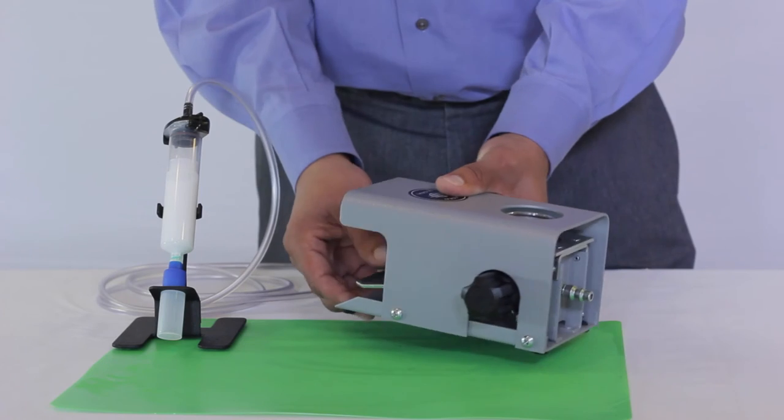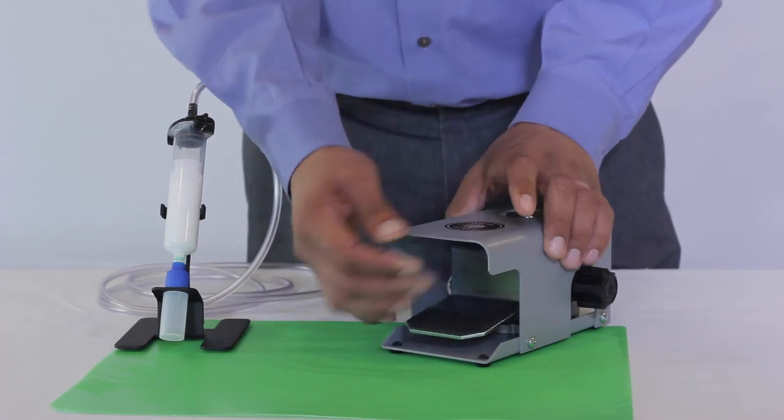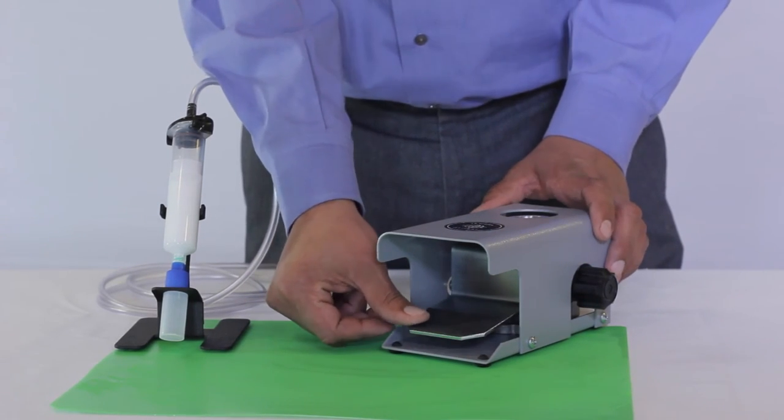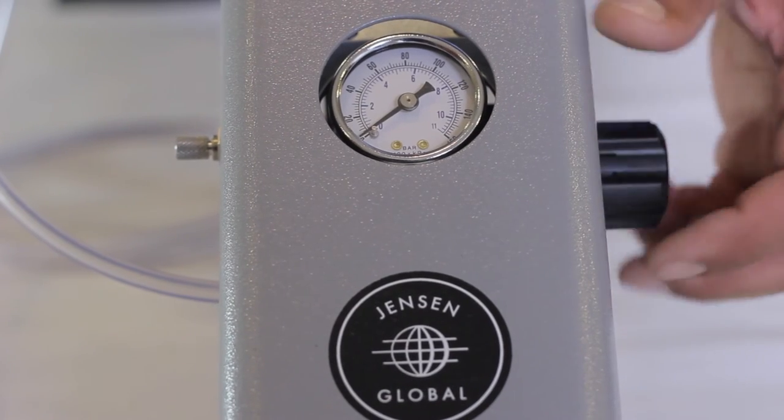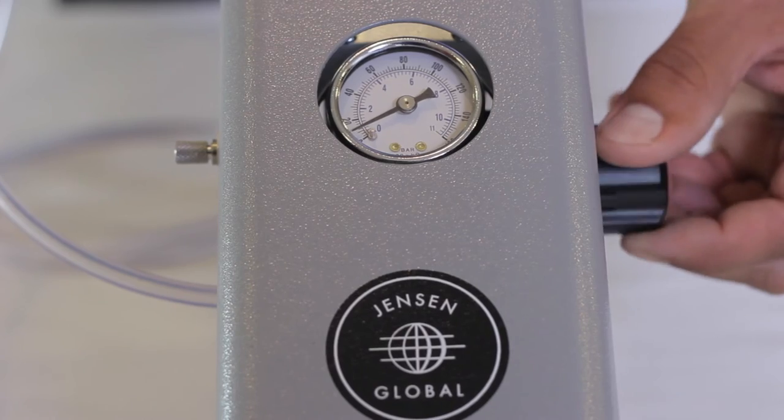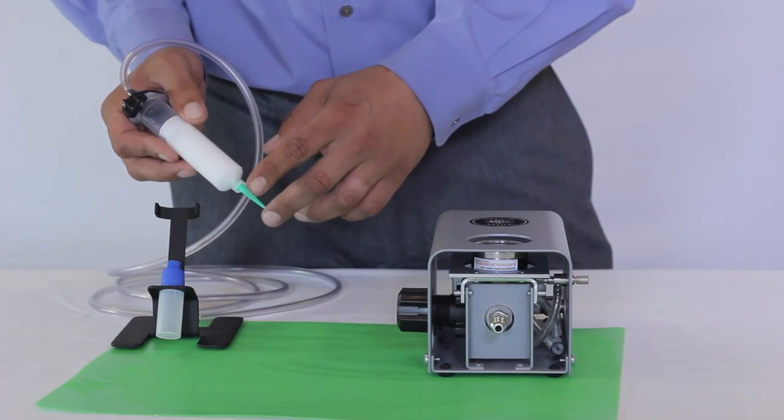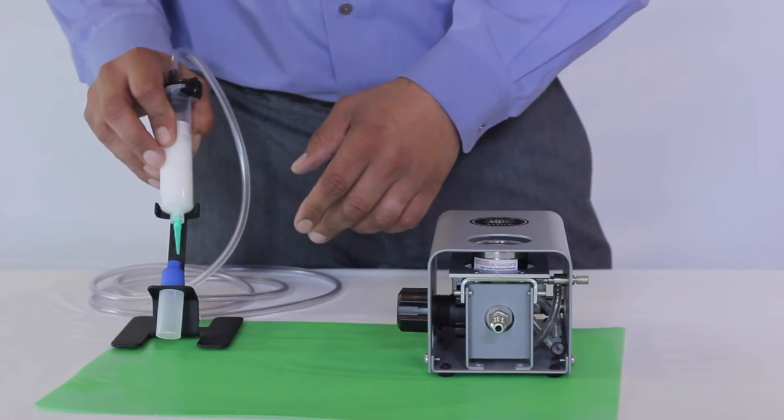The operator uses his foot pedal to control the flow of material, which depends on how much pressure is applied by the operator's foot. Other factors to consider when controlling material flow are the amount of air pressure and what style or gauge size dispensing tip is being used.